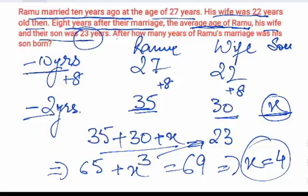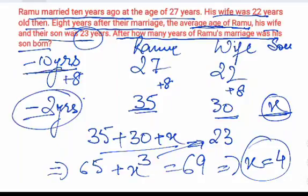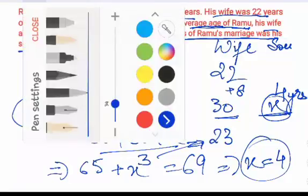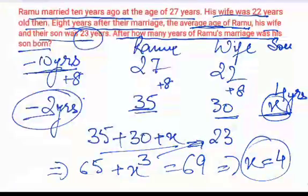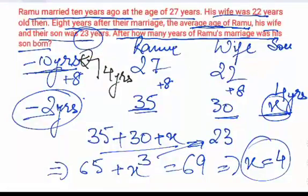So the question is asking: after how many years of Ramu's marriage was his son born? This means 10 years ago they married, and 8 years thereafter — that is this point of time — Ramu's son's age is 4 years. So this means that 4 years after Ramu's marriage, the son was born to them. So the answer is 4 years.